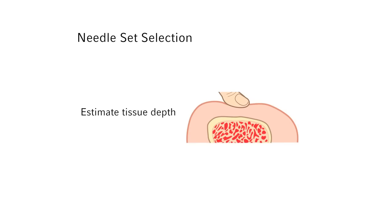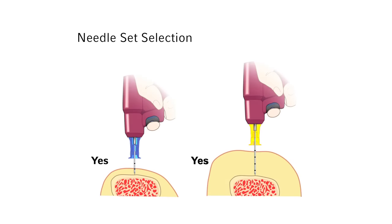Press your thumb or finger over the insertion site to estimate the depth of soft tissue. With the needle set tip touching the bone, the 5 mm mark must be visible above the skin for confirmation of adequate needle set length prior to drilling.